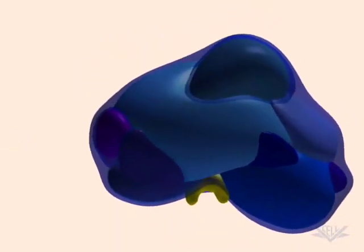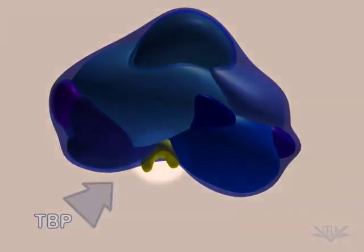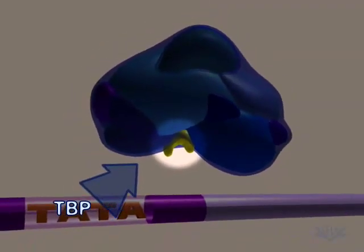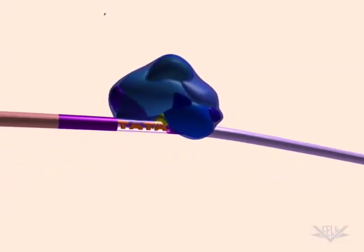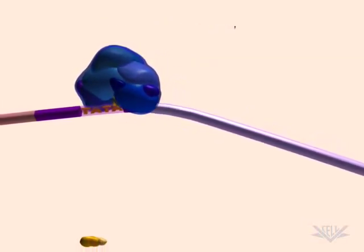Several complexes, known as transcription factors, are required for successful transcription. The first is TF2D, the largest of the general factors. A component of this factor, TBP, binds to the DNA using the TATA box to position TF2D near the transcription initiation site.